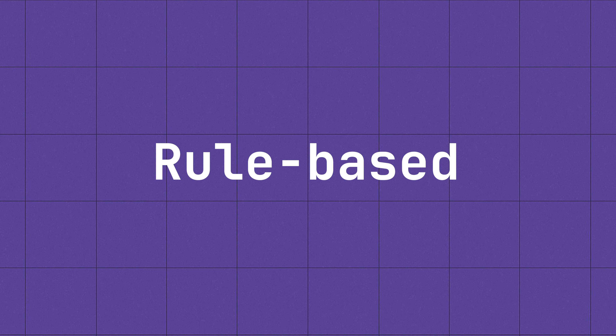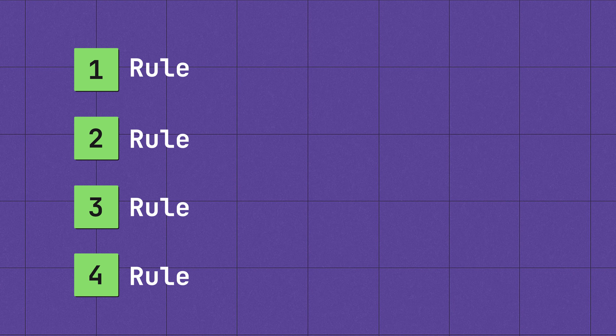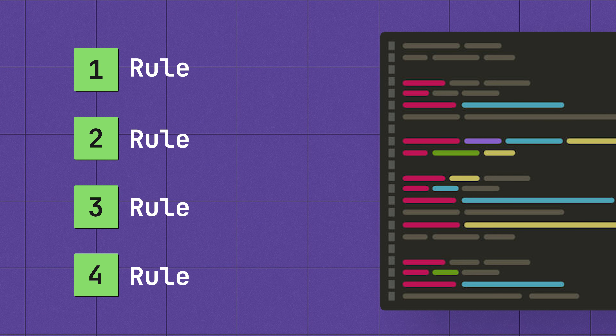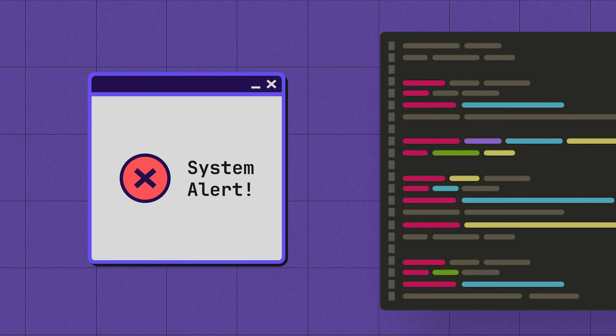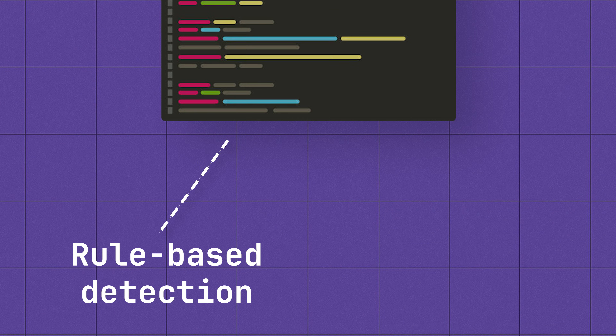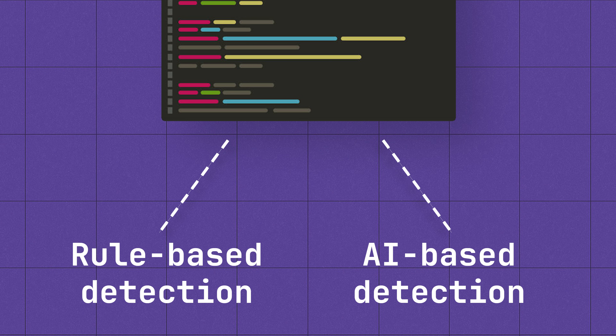There's a bit of nuance to that which we will get to. How does a SAST tool actually find a vulnerability? Typically, they are rule-based. That means there are a whole bunch of rules that, if your code meets these rules, it will lead to an alert. We have tools that stick to this rule-based detection approach, and some that are going more down an AI detection path.